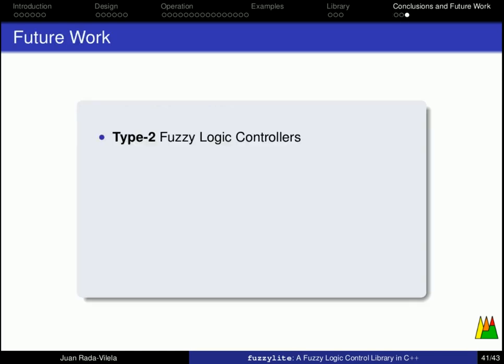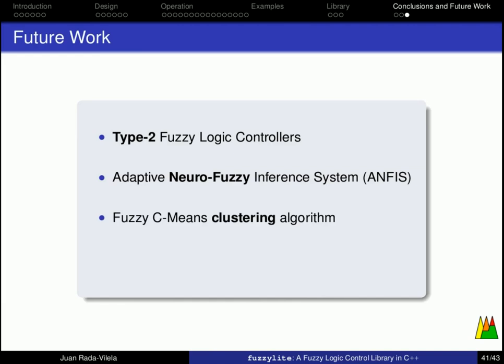As for future work, I expect to incorporate Type 2 fuzzy logic controllers, which include uncertainty on the membership functions. Develop the Adaptive Neuro-Fuzzy Inference System, which includes neural networks and fuzzy systems. And the Fuzzy C-means clustering algorithms. But there are still many more things to do.